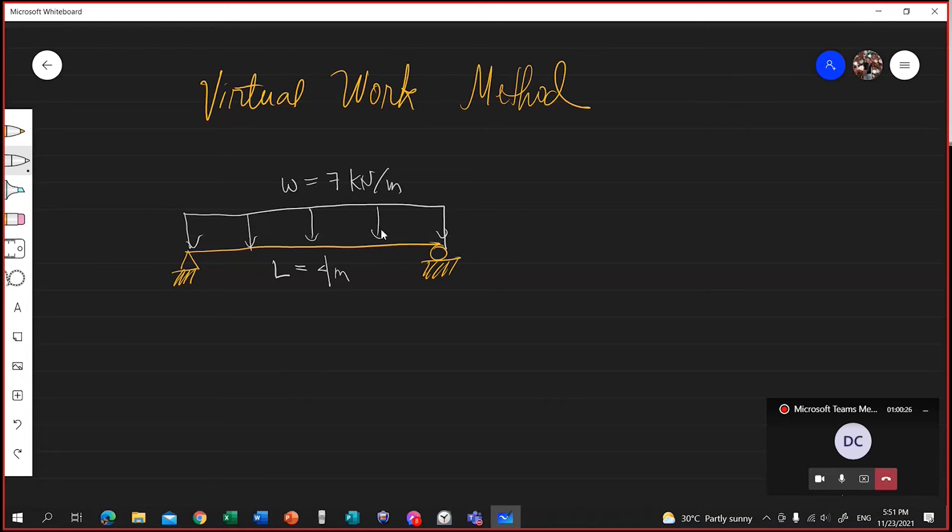Of course, we have to solve for the reaction. So the reaction here is 7 times 4, that's 28, divide 2, that is 14. Is that right? 14 kN is your reaction. 14 kN.